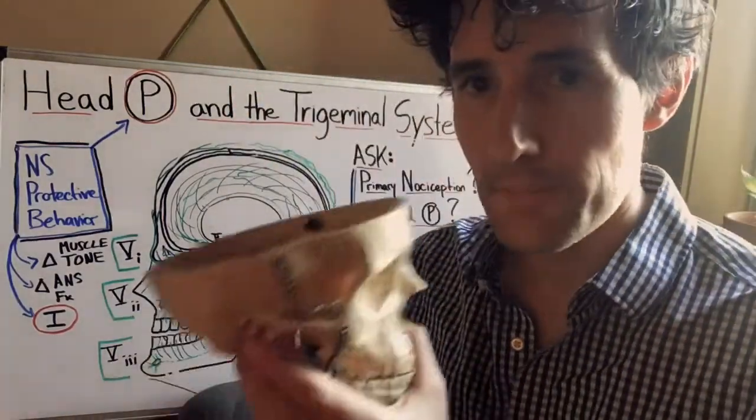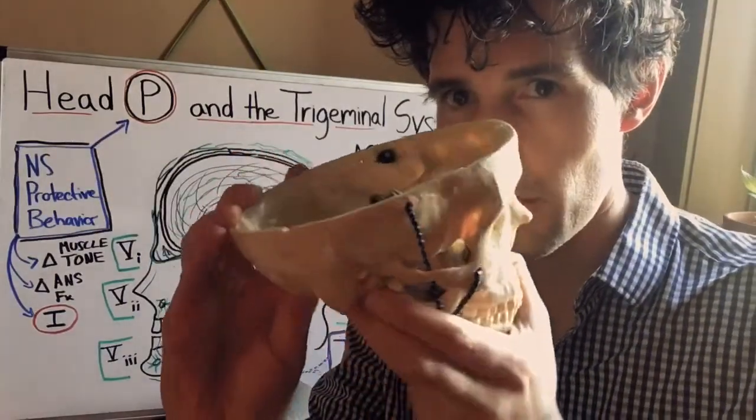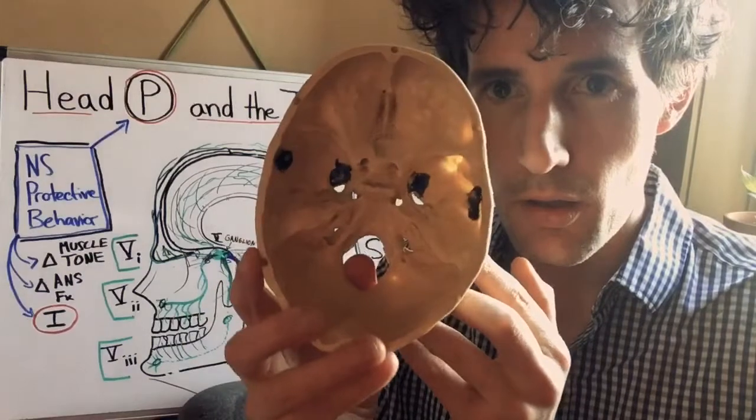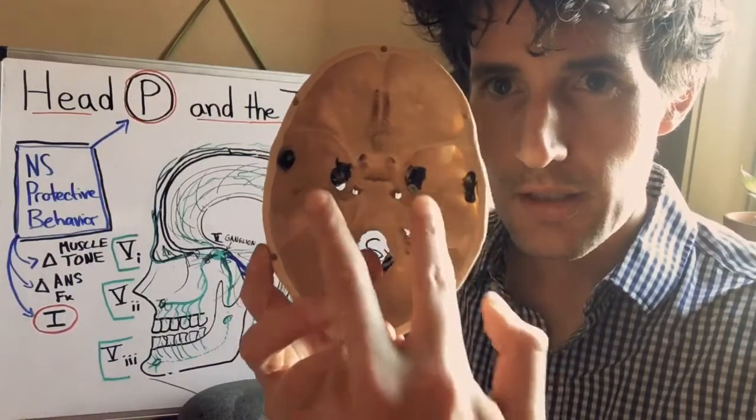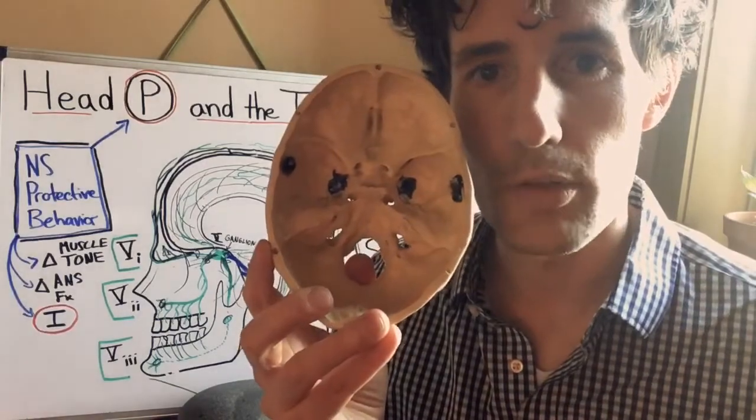Now if we were to chop off a head and then look into the bottom of the cranial bowl, these two dots correspond with the location of the trigeminal ganglia.